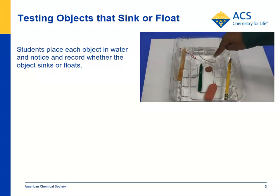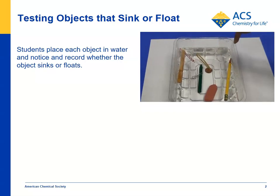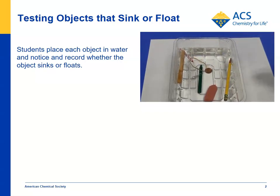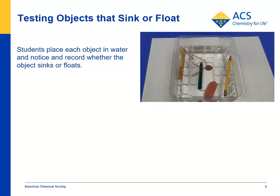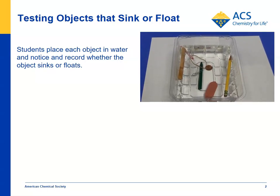A rubber band is at the surface — it actually should normally sink, but it was held up by the surface tension of the water. Students write down whether each object sinks or floats, so you can have a discussion about which objects sank, which floated, and what the characteristics are that caused that to happen.